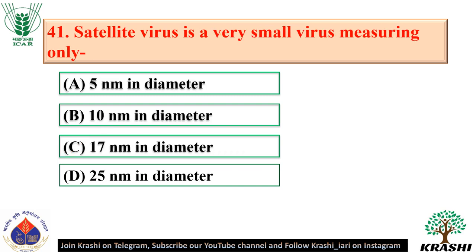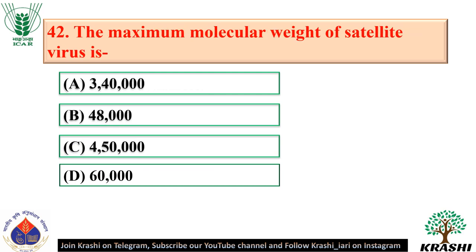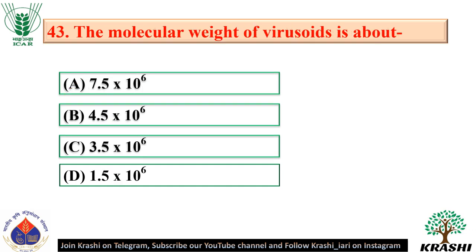Question number 41: Satellite virus is a very small virus, measuring only 17 nanometers in diameter — option C. Question number 42: The maximum molecular weight of satellite virus is 3,40,000 — option A. Question number 43: The molecular weight of virusoids is about 1.5 × 10⁶.